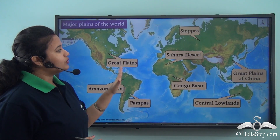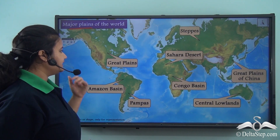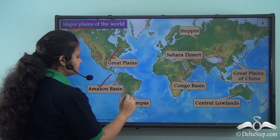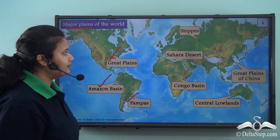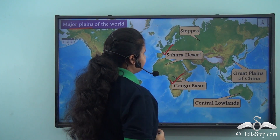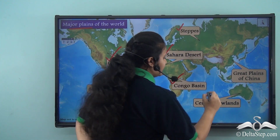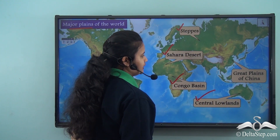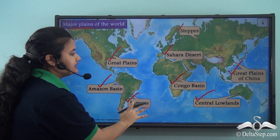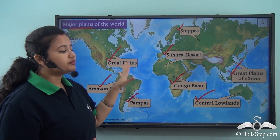This world map shows the major plains of the world: the Great Plains of North America, the Amazon Basin and Pampas of South America, the Sahara Desert and Congo Basin of Africa, the Steppes of Eurasia, the Central Lowlands of Australia, and the Great Plains of China.